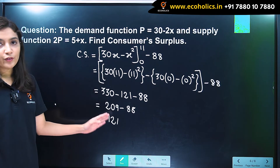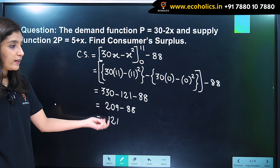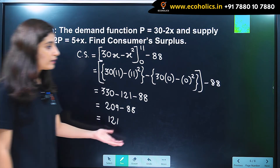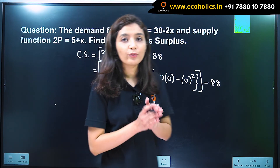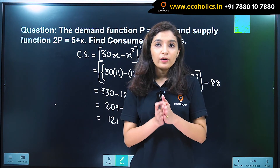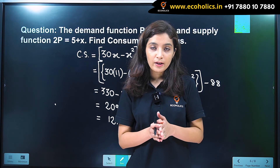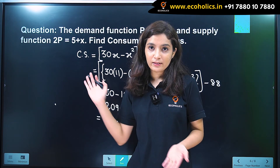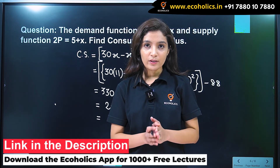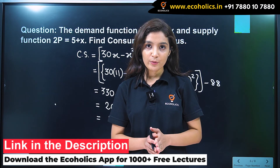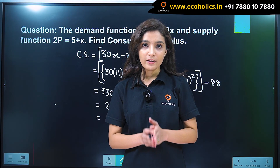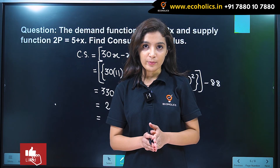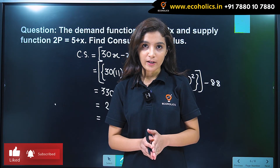209 minus 88 gives us 121. So our value of consumer surplus is 121. We have seen how we can use the formula of integration to find consumer surplus in examples like this. That's it for this video. In our subsequent videos, we will also be discussing numericals on producer surplus. Do like and subscribe our channel. Thank you.